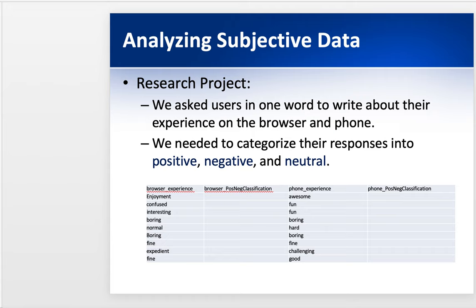How do we know if these are positive and negative words? Of course, some of these like awesome and enjoyment — most people would say these are positive words. But sometimes "hard" — is that good or bad? Or "fine" — okay. There are certain words where it's a little subjective whether they're good or bad. One way to handle that is to have two different people code them and say whether they think it's positive, negative, or neutral. So you're not just relying on my opinion. You can have two people, and if they disagree, you can resolve it through discussion or by getting a third party. This is one way to analyze this kind of subjective qualitative data.